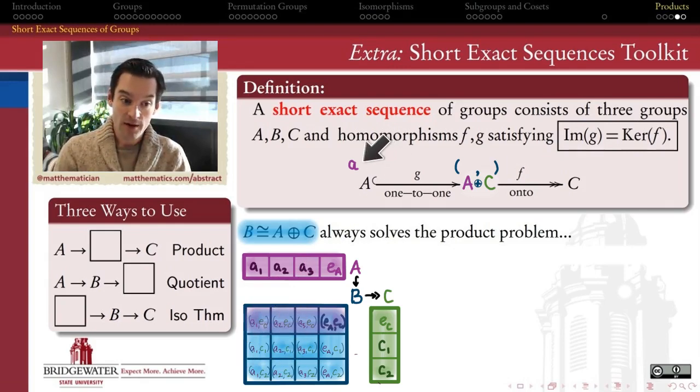That suggests that maybe a way of doing this is just to take A and implant it into this external direct product as just the elements on that first row. The first component just gives me that element of A. So, A gets sent to A, comma, the identity of C. So, I'm sending this directly into the first row.